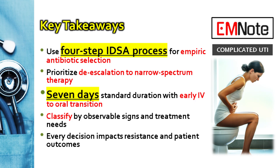Key points to remember: Use the four-step IDSA framework to guide empiric antibiotic selection for C-UTIs. Prioritize de-escalation to narrow-spectrum therapy once culture results are available. A seven-day treatment course is standard for most patients. Transition from IV to oral therapy early for stable patients. Classify C-UTIs based on observable symptoms and treatment needs rather than outdated definitions. By adhering to these guidelines, healthcare providers can optimize treatment outcomes, minimize resistance, and enhance patient care in managing complicated urinary tract infections.